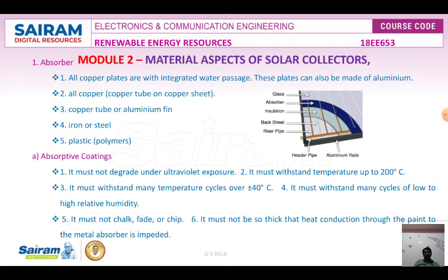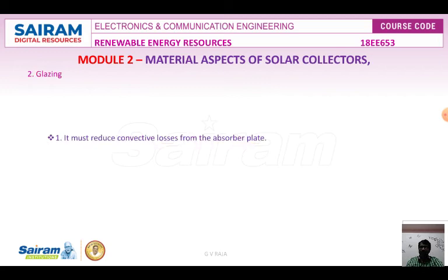The specifications required for the absorber coating of flat plate collectors are: it must not degrade under ultraviolet exposure; it must withstand temperatures up to 200 degrees Celsius; it must withstand many temperature cycles over plus or minus 40 degrees Celsius; it must withstand many cycles of low to high relative humidity; and it must not chalk, fade, or chip.